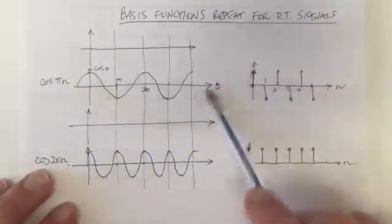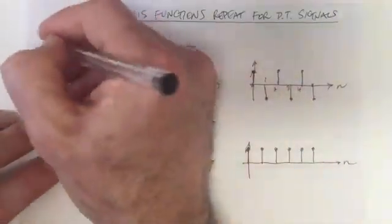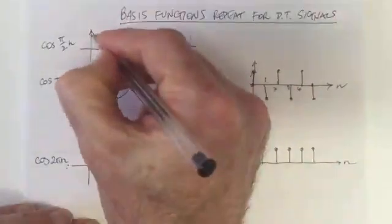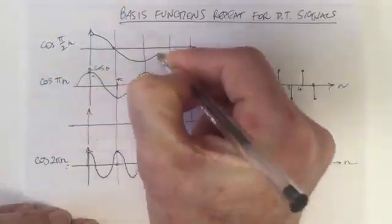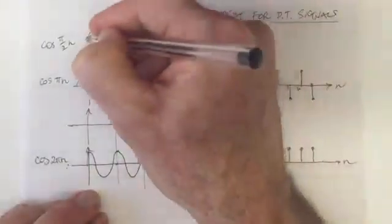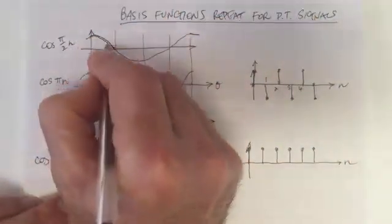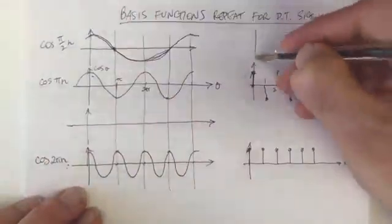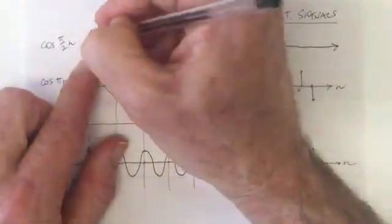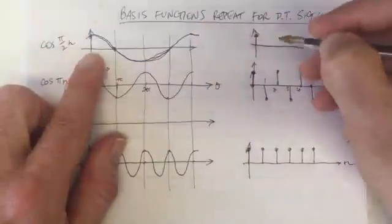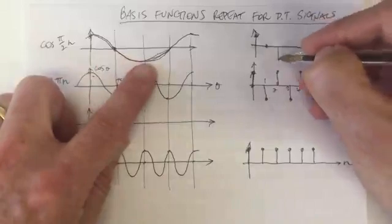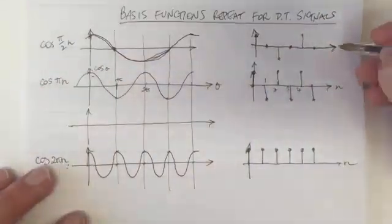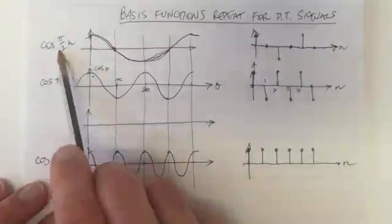Let's look at half the frequency — a slower one. So this waveform is cos(π/2 · n), which means the period takes twice as long. At the sampling times, what do we get? The first sampling time is 1, then 0, next sampling time minus 1, back to 0, back to 1, back to 0. So this is the plot in discrete time of cos(π/2 · n).